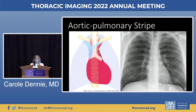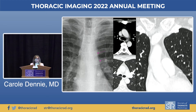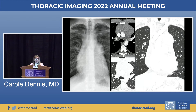The aortopulmonary stripe is perhaps less commonly discussed. It's formed by the mediastinal interface of the anterior pleura of the left lung in contact with the mediastinal fat anterolateral to the left pulmonary artery and aortic arch — usually a straight line. On CT it corresponds to the pleura abutting the fat and/or the lateral aspect of the ascending aorta. It can be seen as a stripe in pneumomediastinum, outlined by gas in the mediastinum and air in the adjacent lung, or caused to bulge by anterior adenopathy.